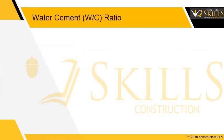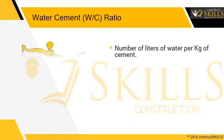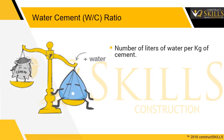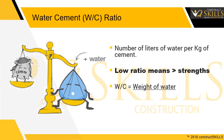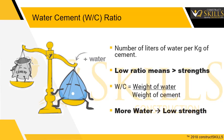Water cement ratio is the number of liters of water to be added in a concrete mixture per mass of cement. In other words, it is the ratio between the weight of water and the weight of cement in a concrete mix. Site personnel often increase water content to improve the ease of placing concrete. This is not good, as it damages the concrete and reduces its strength.